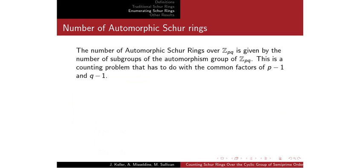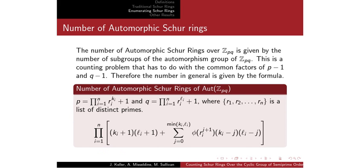The counting argument has a lot to do with the common factors of P − 1 and Q − 1. We started by dealing with some specific cases like safe primes and Fermat primes, but we've now arrived at a general formula. Using the totient function and these finite sets, we can count the actual number of automorphic Schur rings over that group, and this automorphic piece will be added into our final formula.